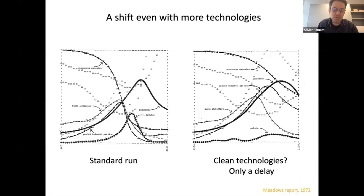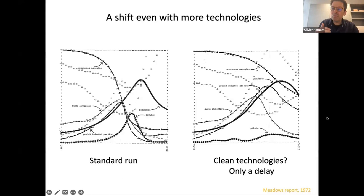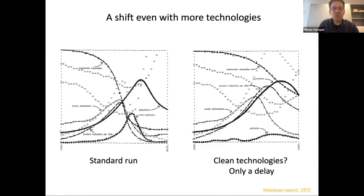There was another scenario modeling what would happen if we have access to clean technologies. If we have clean technologies, pollution is much less, which is normal. But the tipping point is still there — just delayed. So that's the positive point: it's delayed, but it's still there. This is perhaps the most important message from this report: the prediction is that the tipping point happens whatever we do in the 21st century, and rather early than late.